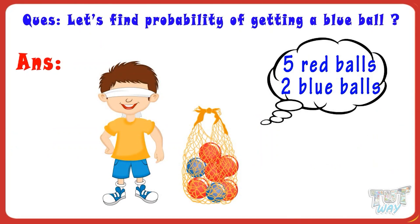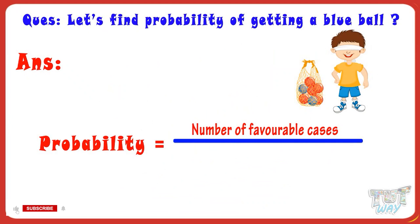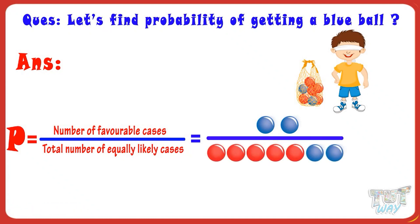We know the probability of number of favorable cases divided by total number of equally likely cases. And here, the number of favorable cases are two, as number of blue balls are two. And total number of equally likely cases are seven, as seven balls are there.